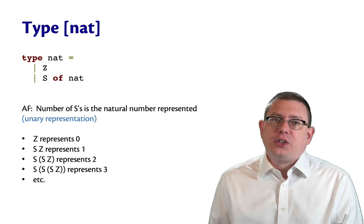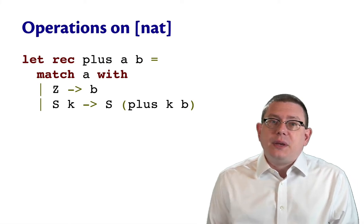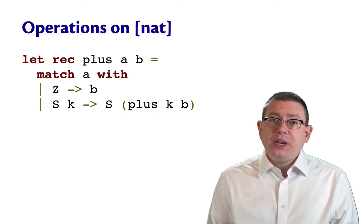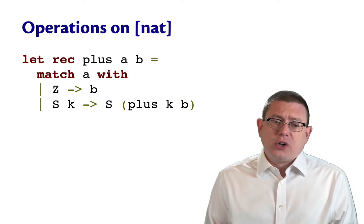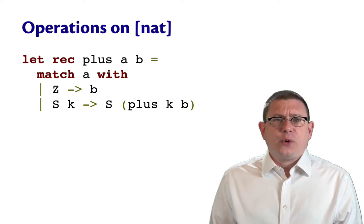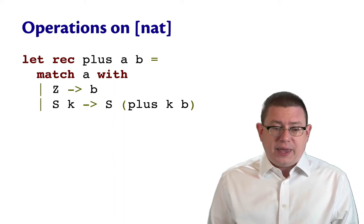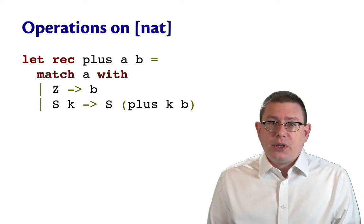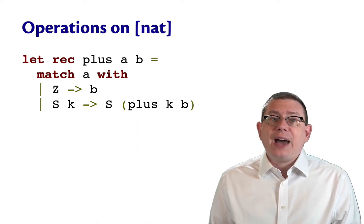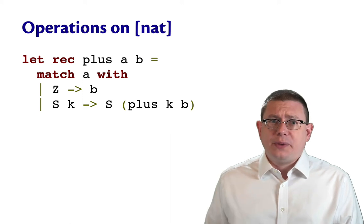Now we can code up recursive functions that implement the standard mathematical operations, but they just have to do it in unary. So here, for example, is an implementation of the plus operation on our type nat. To add together two naturals, A and B, we can implement it by pattern matching. I'm going to match on A. If it's zero, well, then we're trying to add zero into some other number. That should leave the other number unchanged. So we'll just return B. But if A is the successor of some other natural number K, then we'll recursively compute the result of calling plus on that smaller natural number K along with B. And then we'll add one. We'll take the successor of the return value there. So this is a correct but slow implementation of addition.